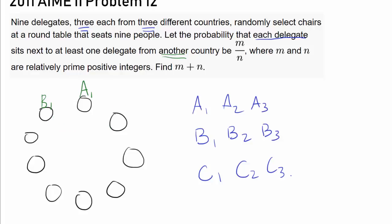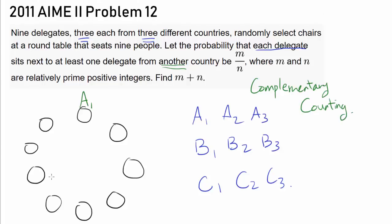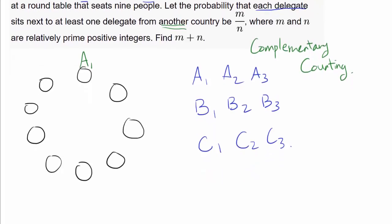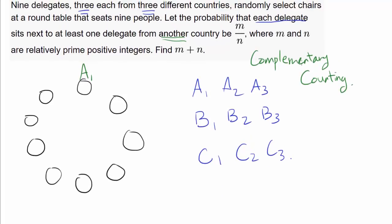Looking at the question, it seems like complementary counting is going to be much easier. So we are going to find the arrangements that we do not want, and simply subtract that from the total number of arrangements to get the arrangements we want. In this case, the complement of each delegate sitting next to at least one delegate from another country is: all A's are together, or all B's are together, or all C's are together.